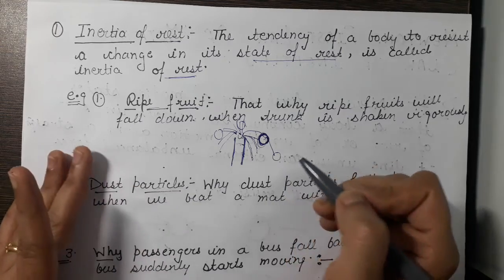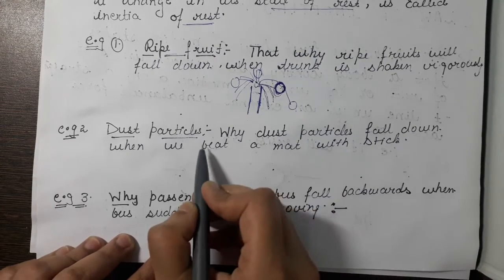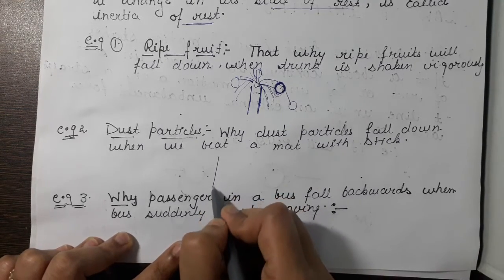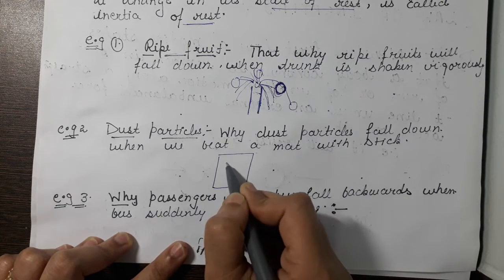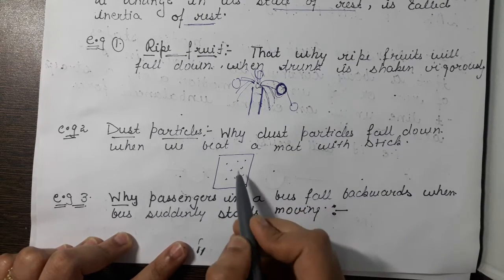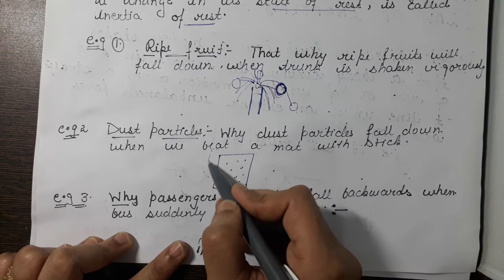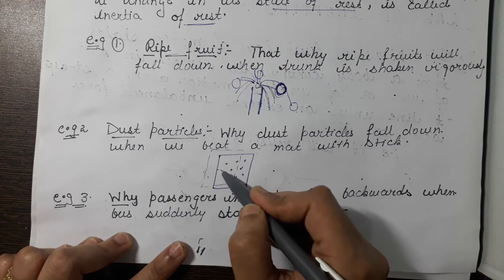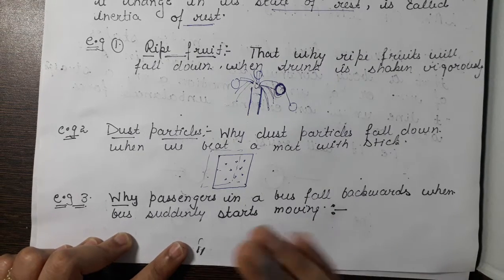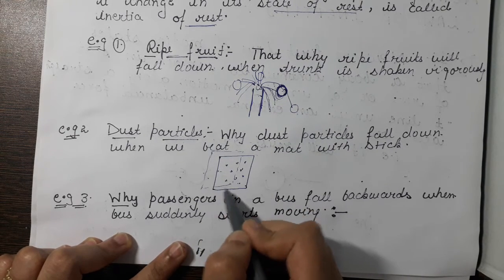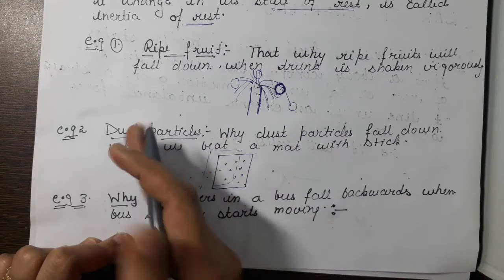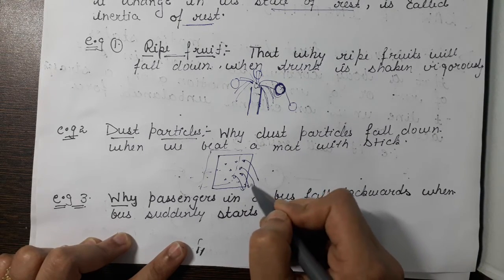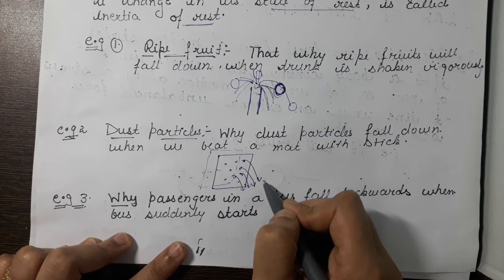The fruit possesses inertia of rest because it is trying to remain in the state of rest. Second example: why do dust particles fall down when we beat a mat with a stick? When we apply force on the mat, the mat changes its position, but the dust particles try to remain in the same state of rest — they resist the change. The mat is displaced but the dust particles remain in that same position and fall down.